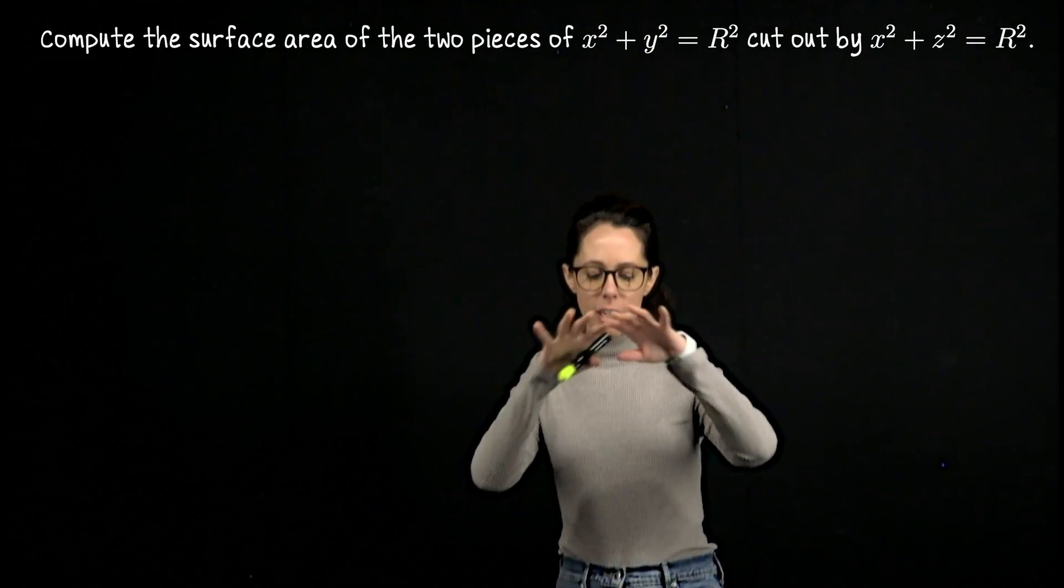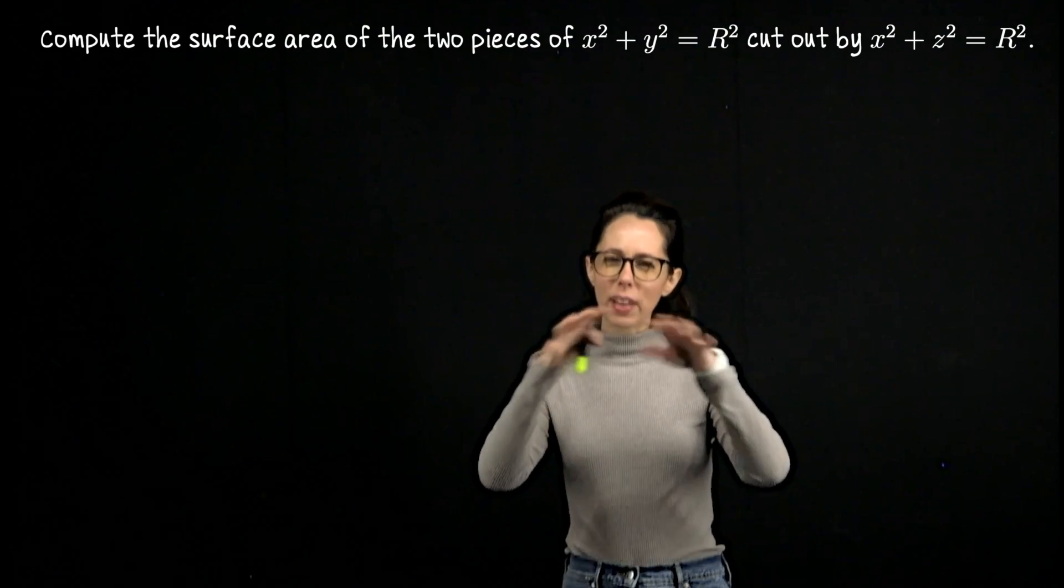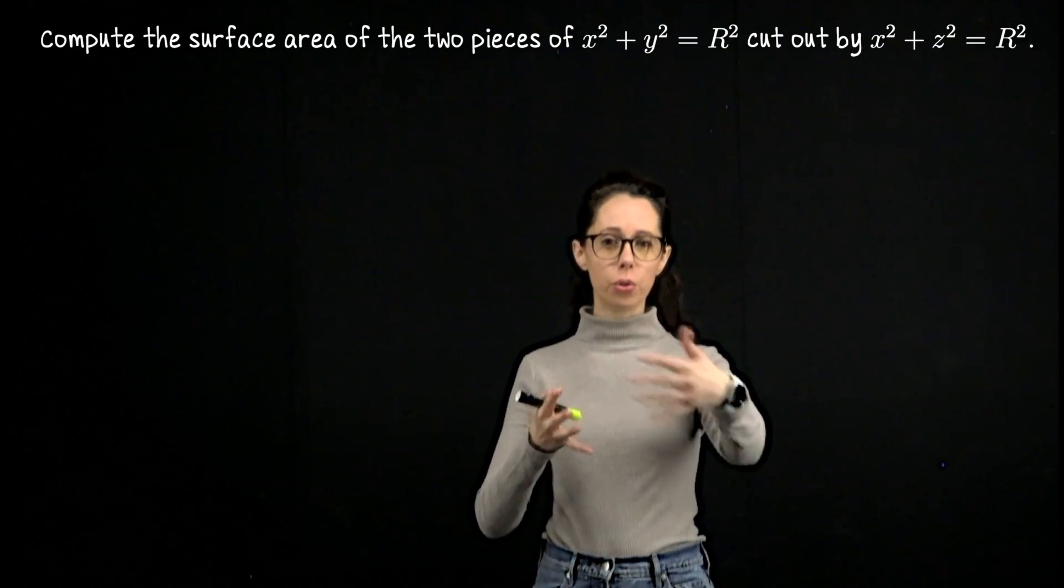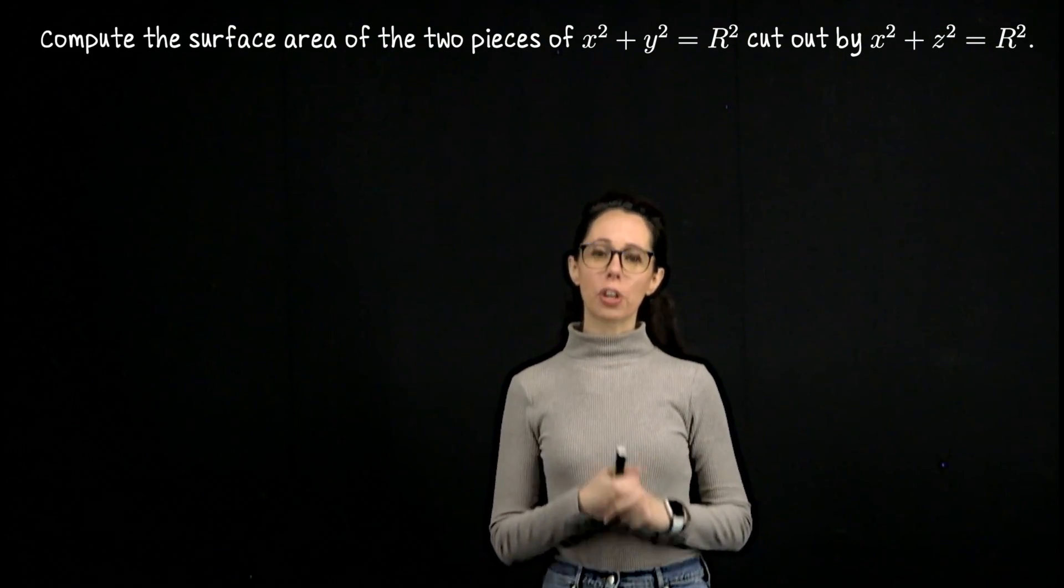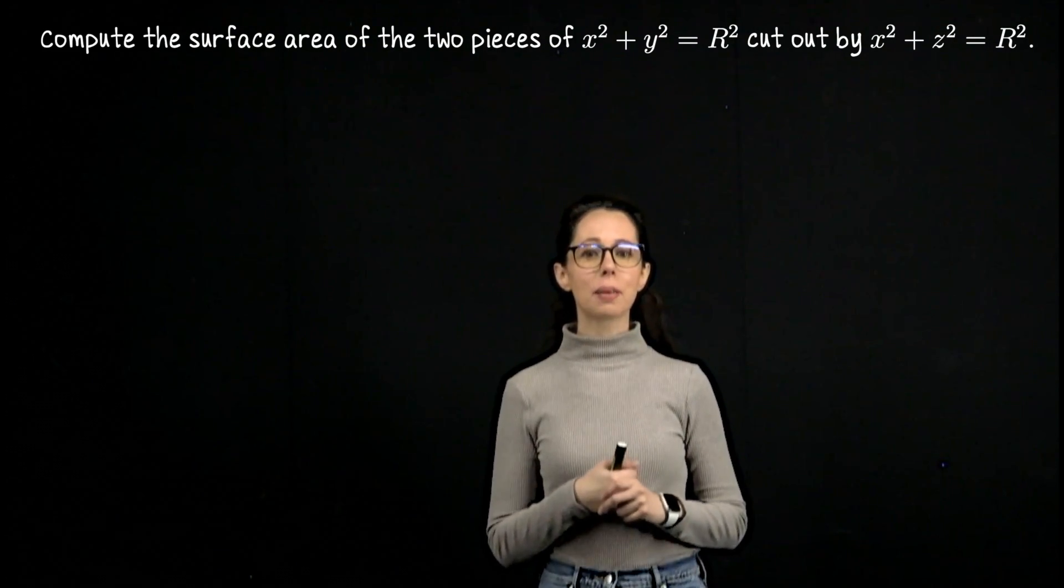One cylinder is basically cutting out what is sort of like a disk-shaped region from the other. In fact, two such regions on opposite sides of the cylinder. We want to compute the surface area of those two regions combined.